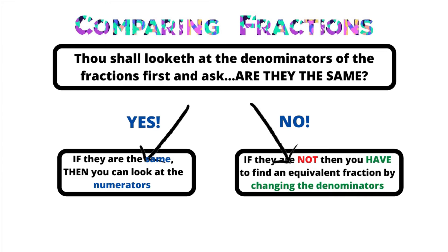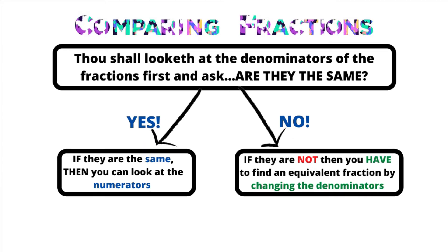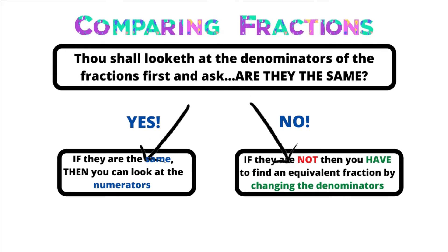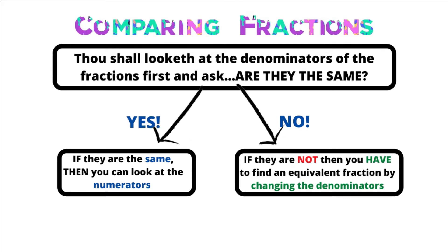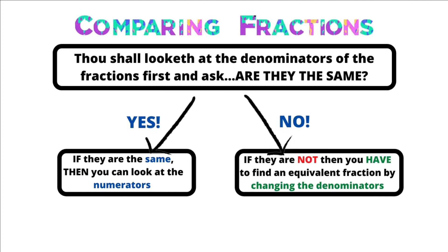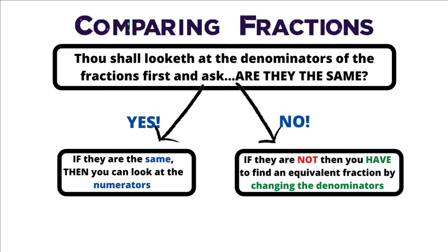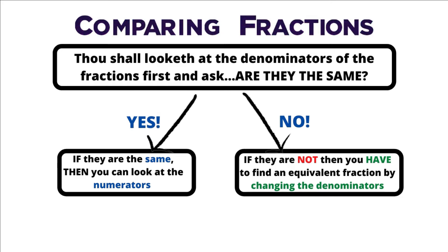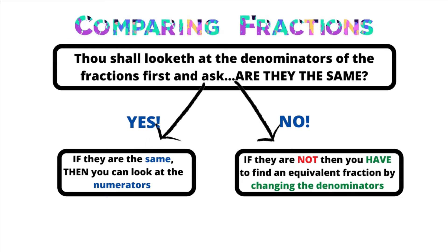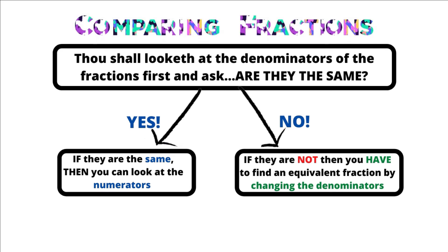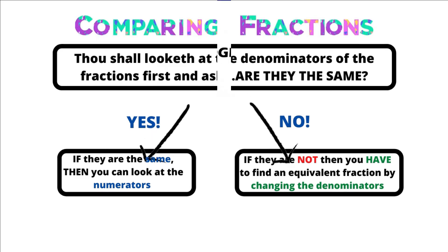If the denominators are not the same, then we have to find an equivalent fraction by changing the denominators — by finding equivalent fractions for the fractions we're comparing. We're going to choose to do this today using the pattern method. We have videos on finding equivalent fractions by multiplying, simplifying using division, or by using repeated addition, which is what we call the pattern method. If you're not sure what that is, check out that video first, then come back.